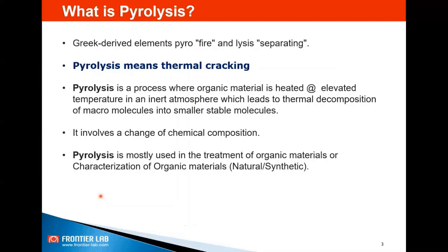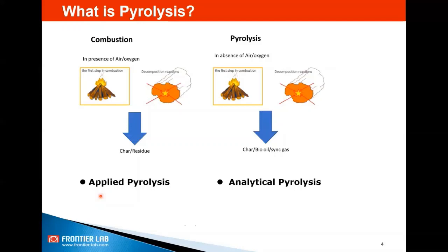We will be focusing on the characterization aspect in this video and our future tutorials. Most of you must be familiar with combustion. In combustion, heat energy is applied to organic material in the presence of air or oxygen, which leads to complete mineralization to produce carbon dioxide. It is important to ensure that the carbon dioxide is properly managed to avoid any global warming issues. On the other hand, in pyrolysis, heat energy is applied to organic matter in the absence of air or oxygen, which helps to produce valuable products like char, bio-oil, or syngas, depending upon the type of pyrolysis conditions employed.